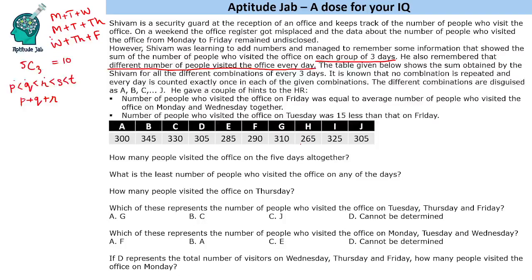Looking at the values, the smallest value out of all these is 265, so p + q + r = 265. Now, the next smallest value will come when we have p + q + s, because one value is being replaced by the next higher value. So p + q + s gives us the next smallest number, which is 285.